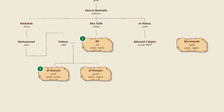Some people consider Al-Hasan to be the next rightful caliph. However, he actually abdicated the caliphate in favor of Muawiyah in order to end the civil war. After this, he mostly retired from public life until his death in 670. Shias believe that he was poisoned by Muawiyah. At this point, Al-Hasan's younger brother, Al-Husayn, became the third imam.